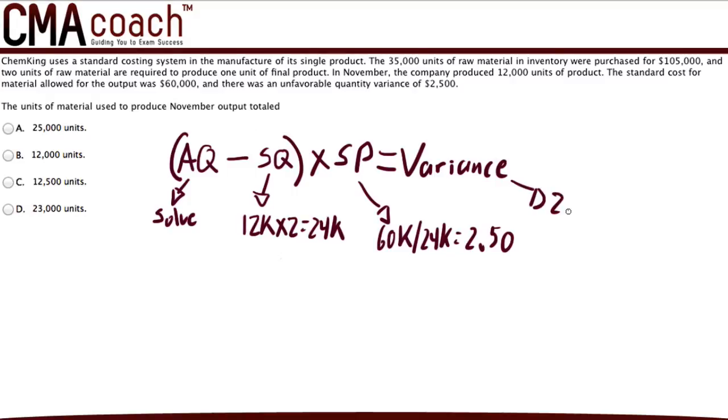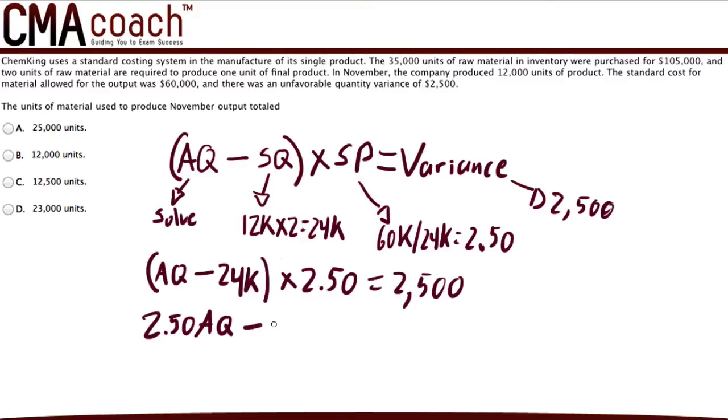Now the variance is given, and that's $2,500. And now all we have to do is rewrite the formula and plug in the numbers. So actual quantity minus 24,000 times $2.50 for the standard price equals $2,500. Now it's just a matter of calculating this. So we take actual quantity times $2.50, then we write it out: $2.50 AQ minus 24,000 times $2.50, that's $60,000, equals $2,500.